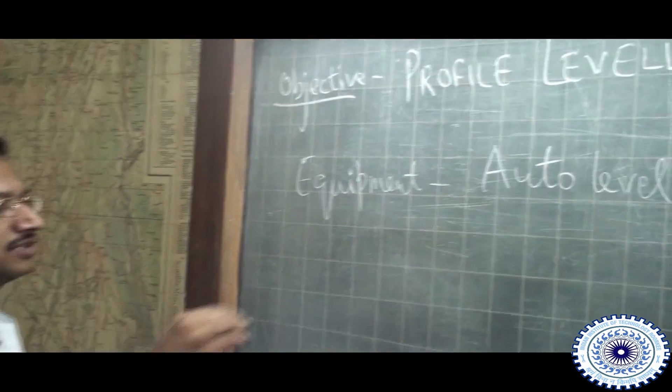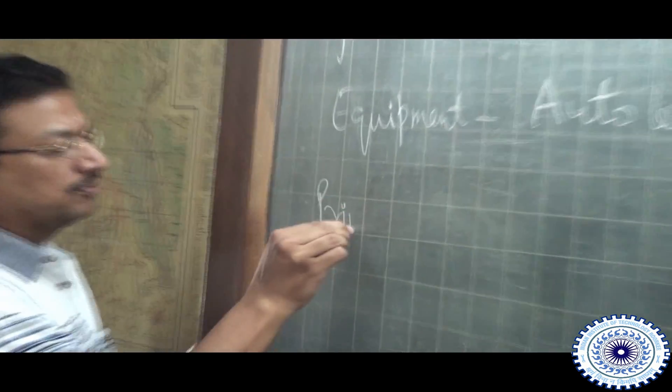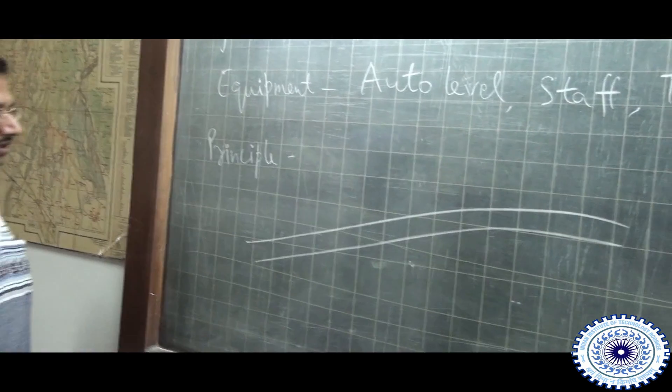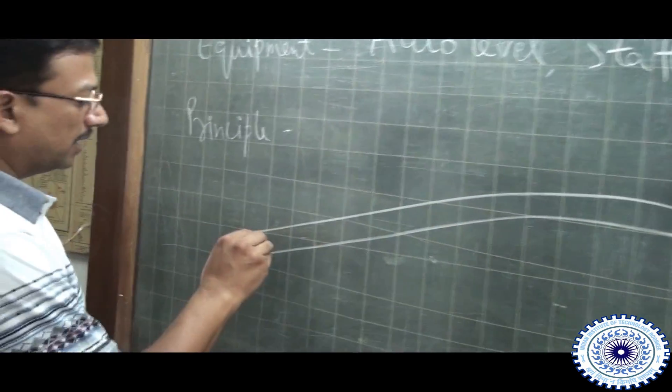The principle of this exercise is to perform profile leveling to find out the profile of any linear object. A very common linear object in surveying is a road. Suppose we have a road; we have to find out the relative elevation of different points of that road.